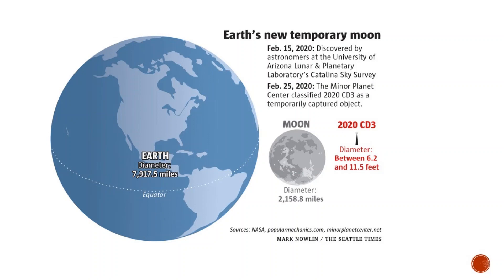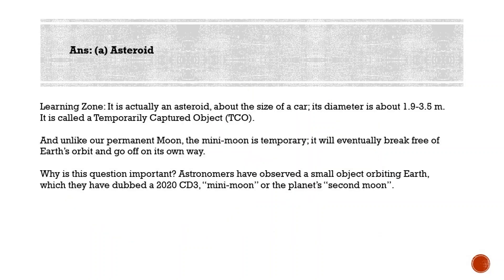When an asteroid's orbit crosses Earth's orbit, it can sometimes be captured into Earth's orbit — this is what happened with 2020 CD3. It is now orbiting at a distance farther from Earth. Such an asteroid is called a Temporarily Captured Object (TCO). The orbit of such objects is unstable, as they must contend with the gravitational influence of our permanent moon as well as the Sun. That's all for today — please post your quiz answers, and we'll meet tomorrow with another set of questions.